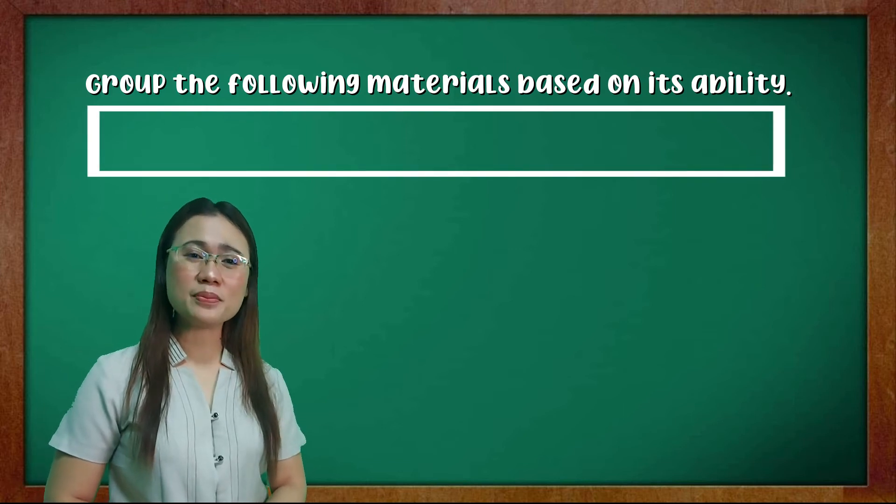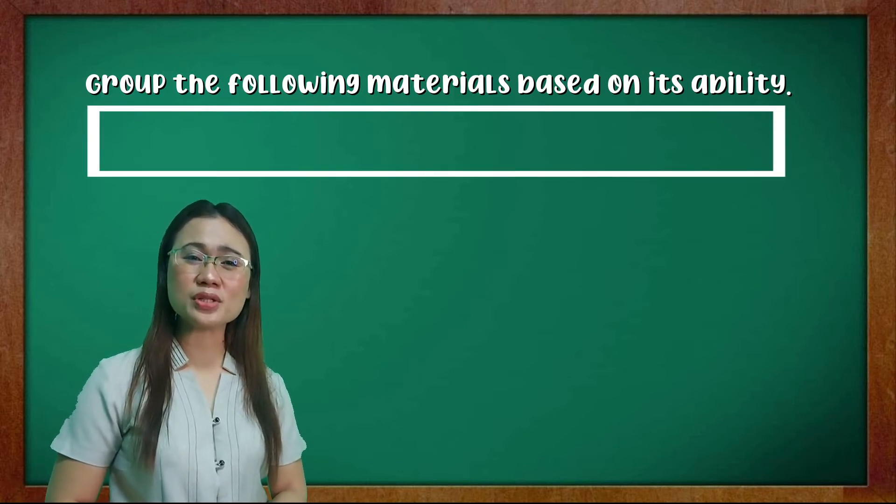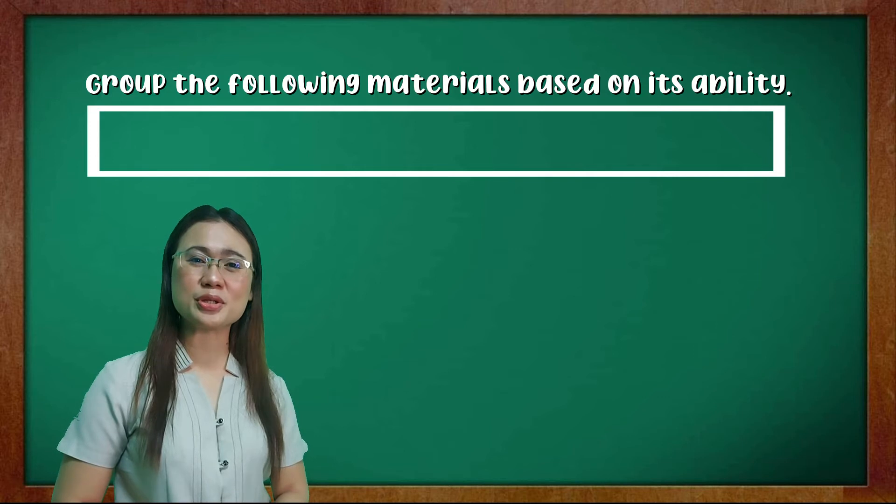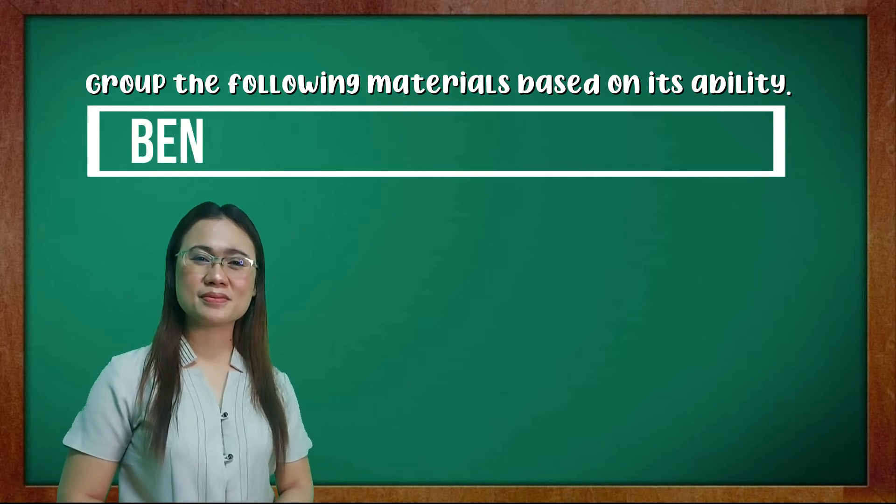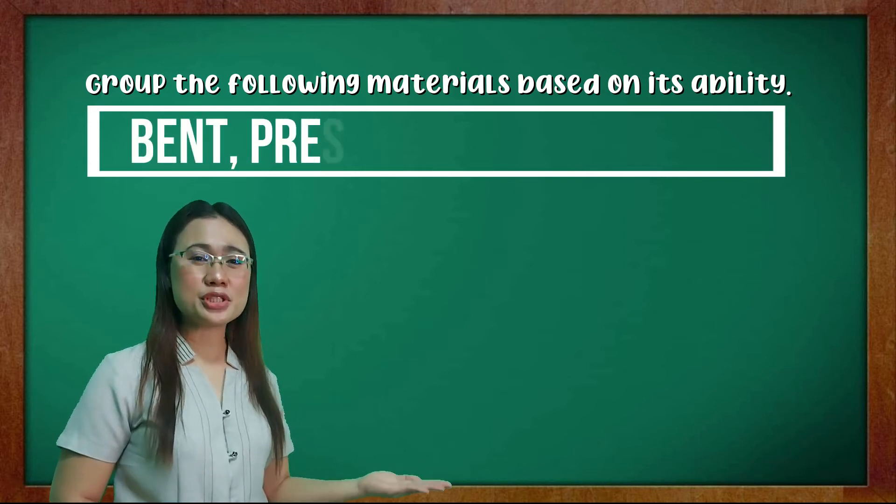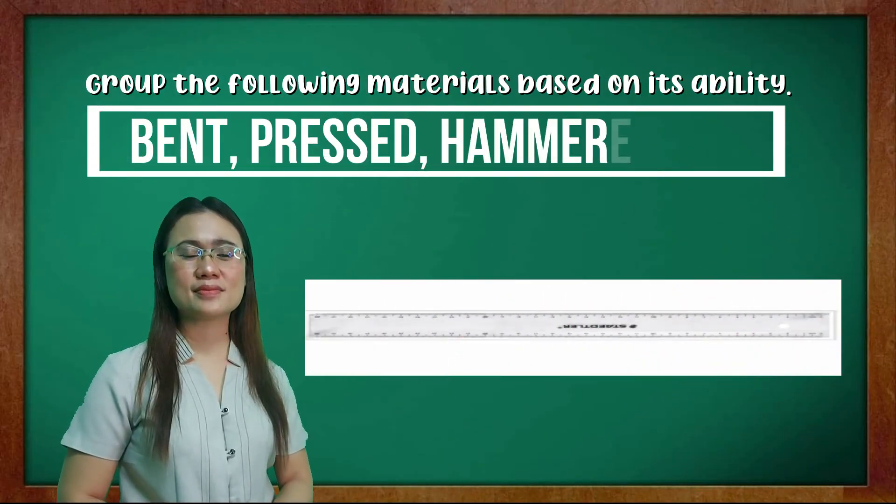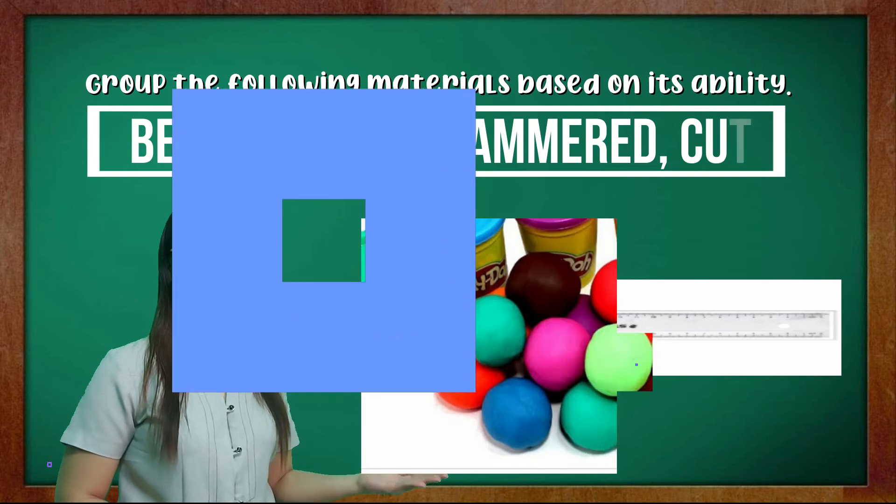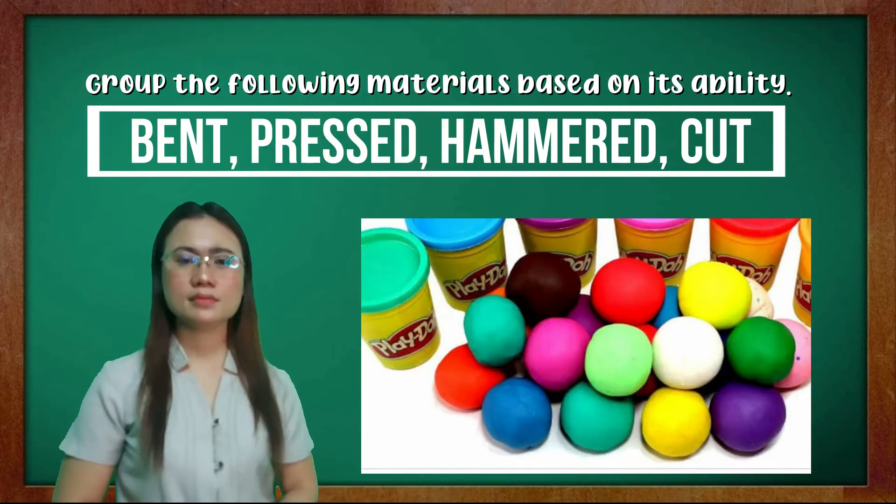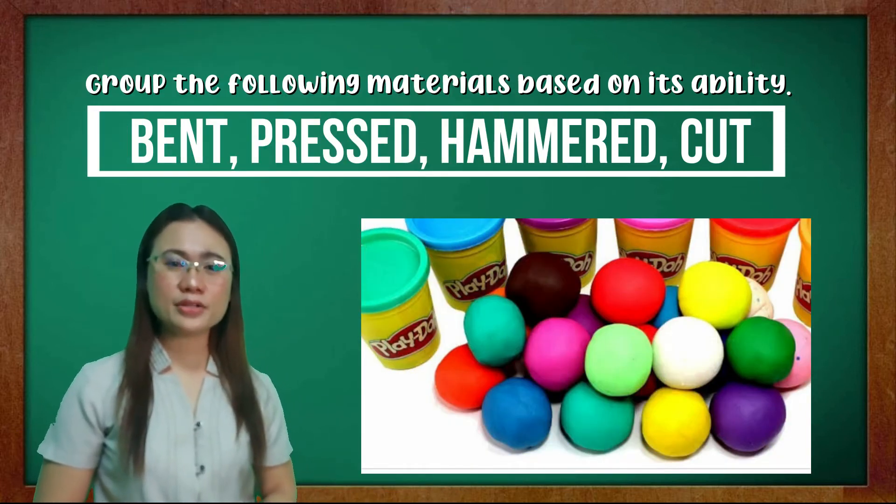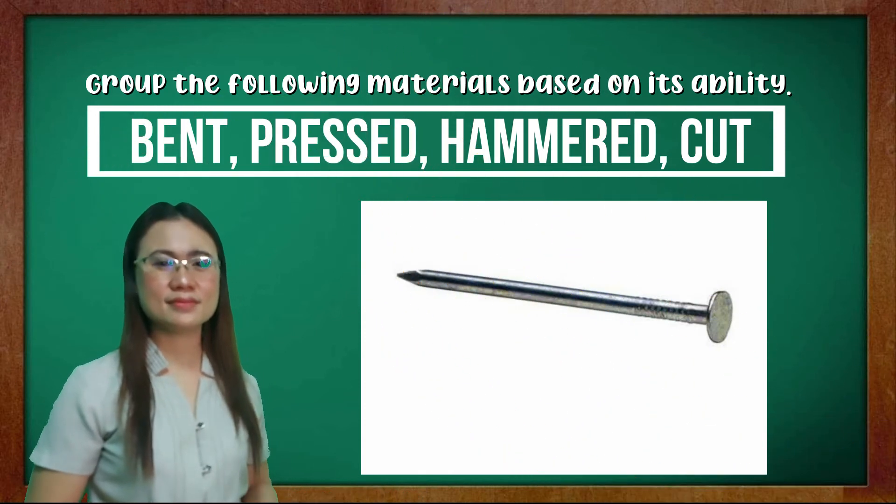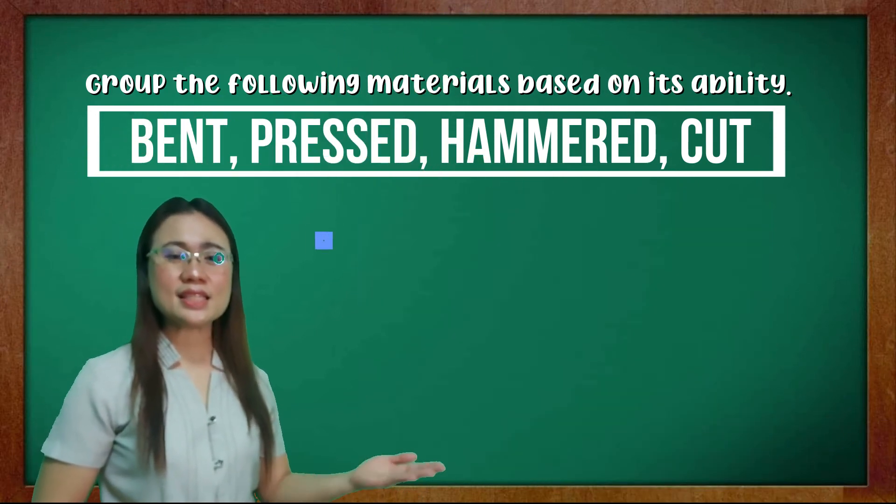We have 12 materials that you're going to sort according to their group. First, plastic ruler, Play-Doh, iron nail, tin can, bread, keyboard.